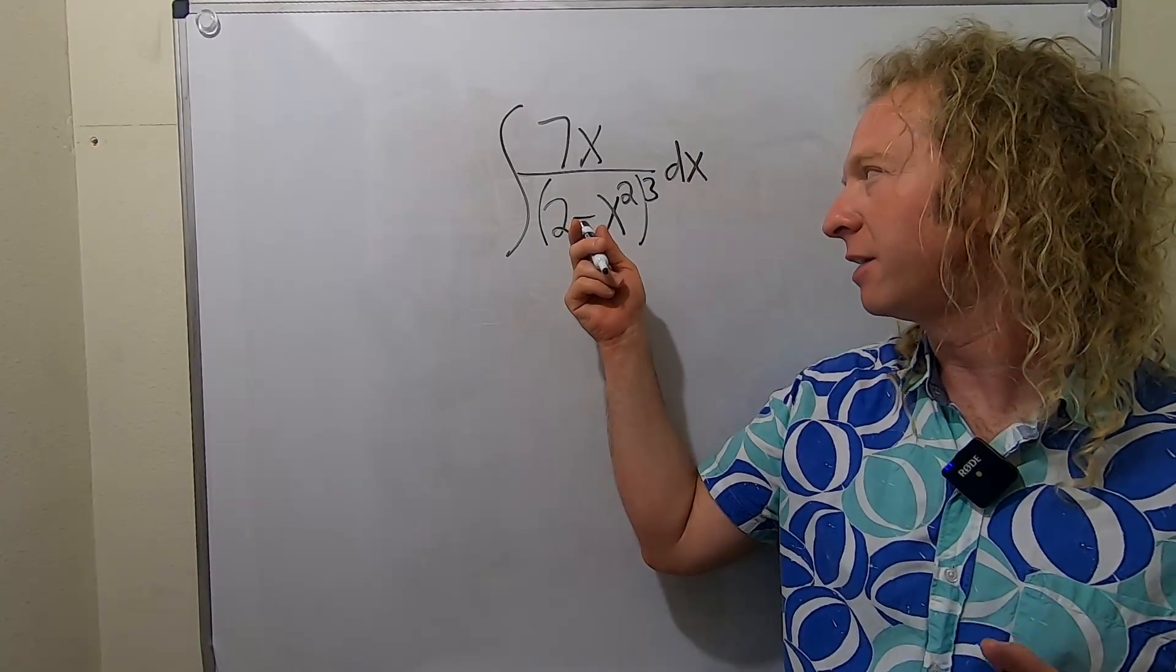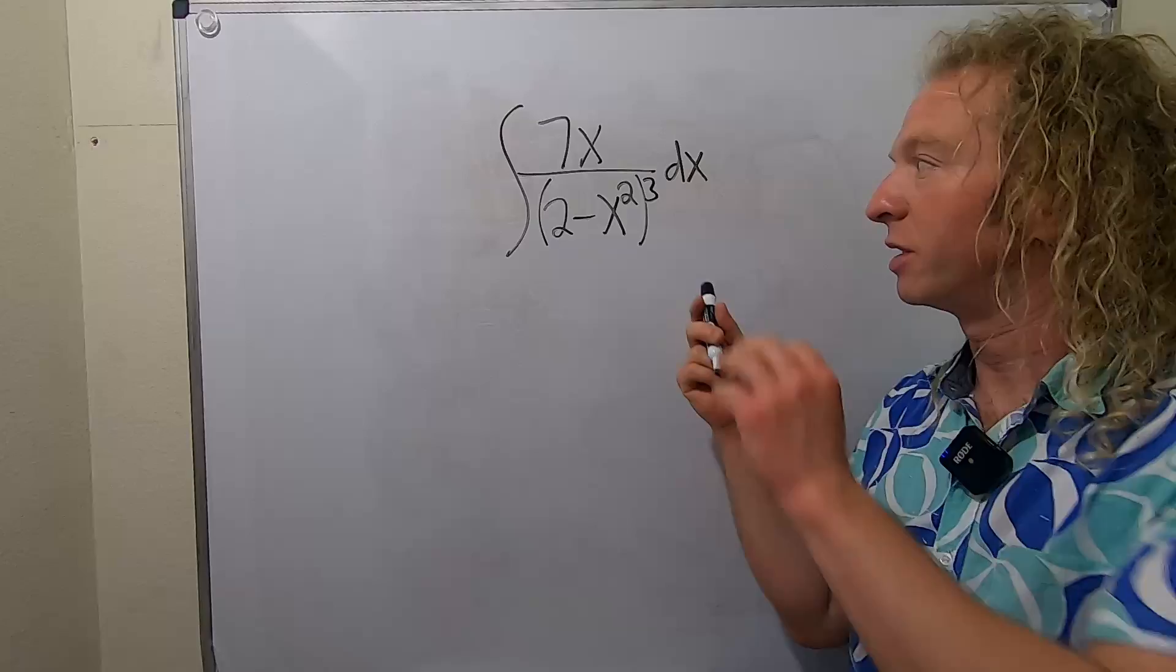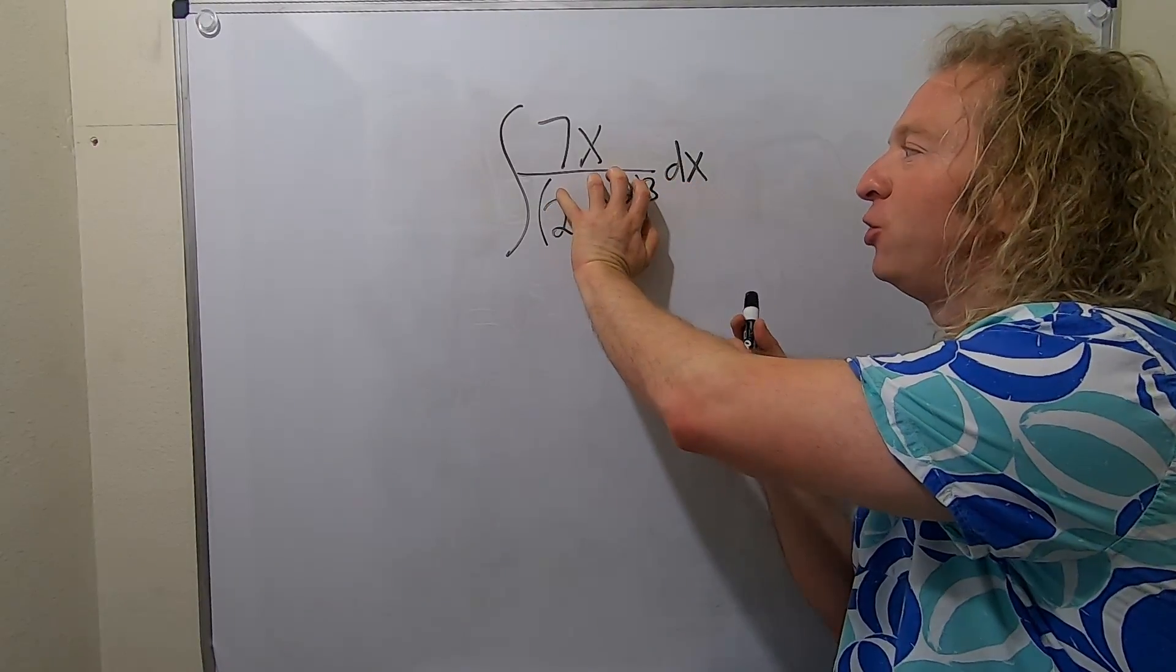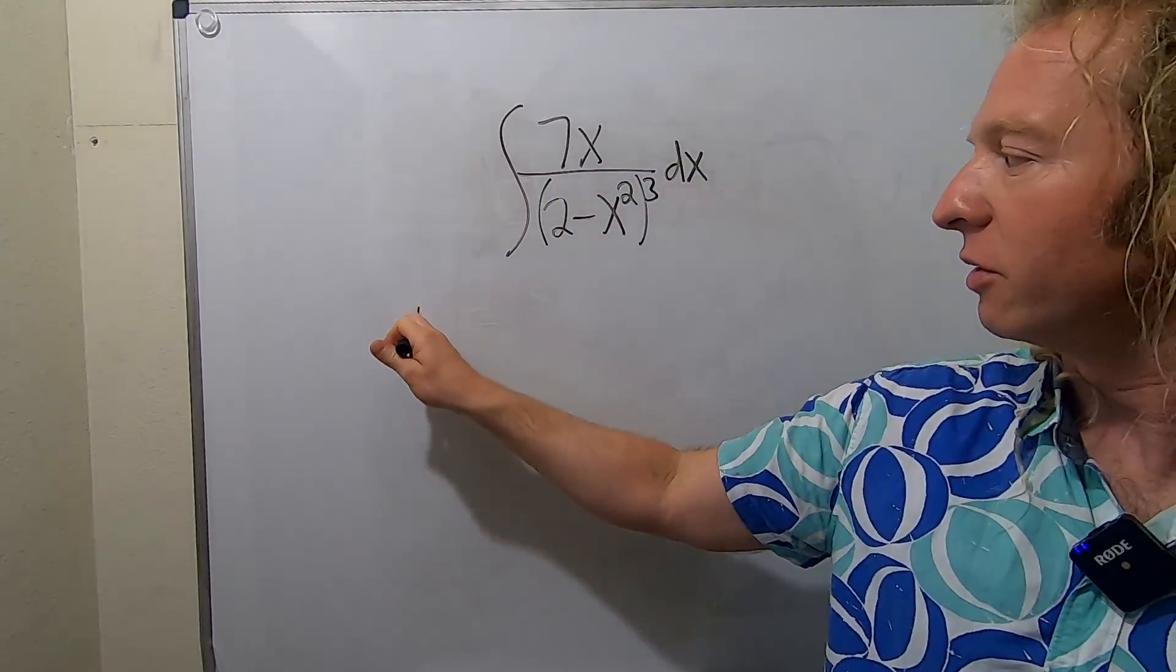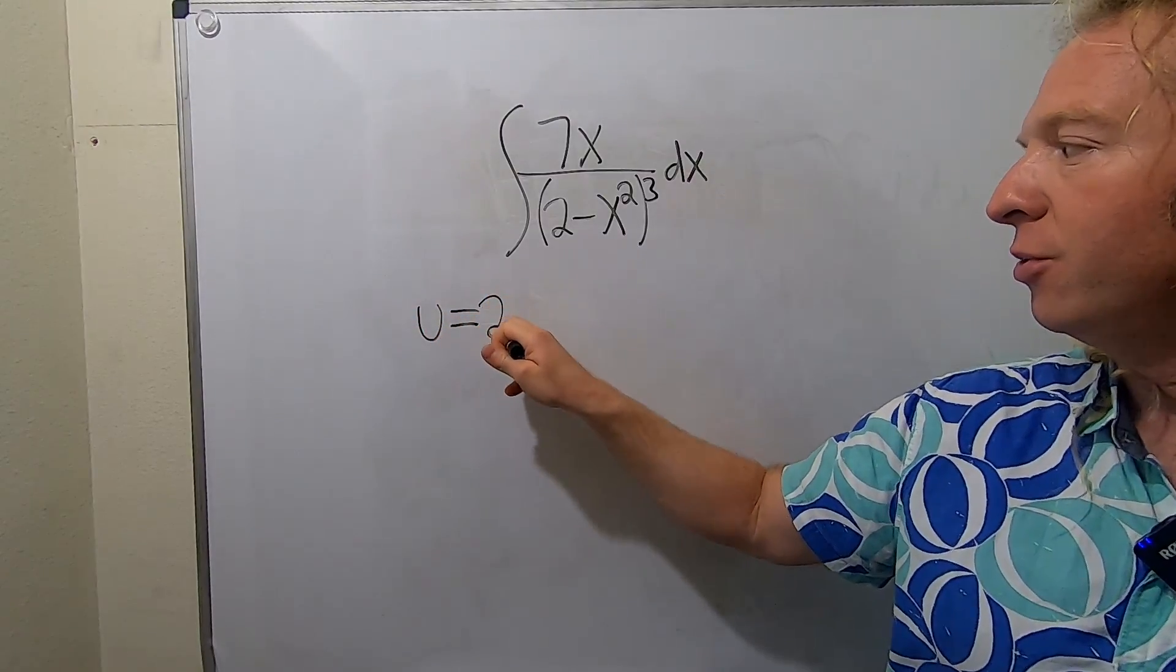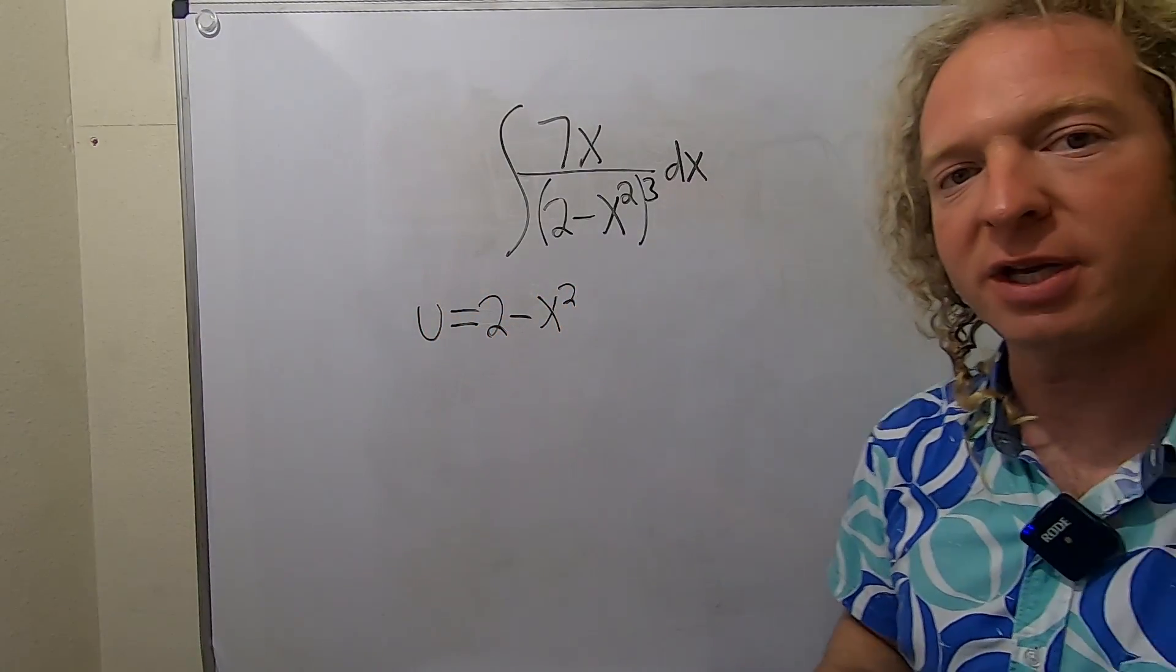In this case, a good first candidate would be 2 minus x squared because it's inside the cubed function. It's in the parentheses. So let u equal 2 minus x squared. That's our first attempt.